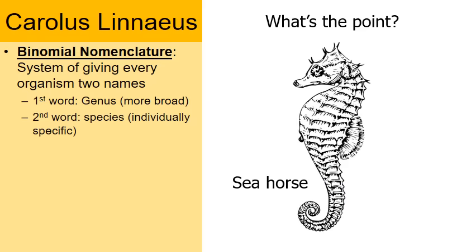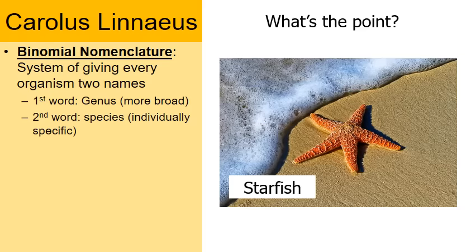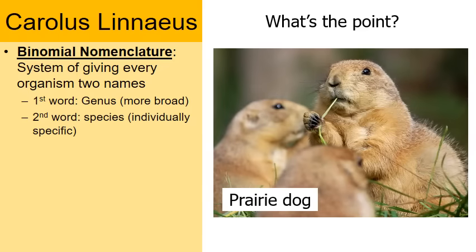Another misleading common name is seahorse — it's not a horse, these aren't mammals; seahorses are fish. Starfish is another example — just because it lives in the water doesn't make it a fish. And a prairie dog's name implies it's in the dog family, when in actuality prairie dogs are rodents, more like mice and rats.